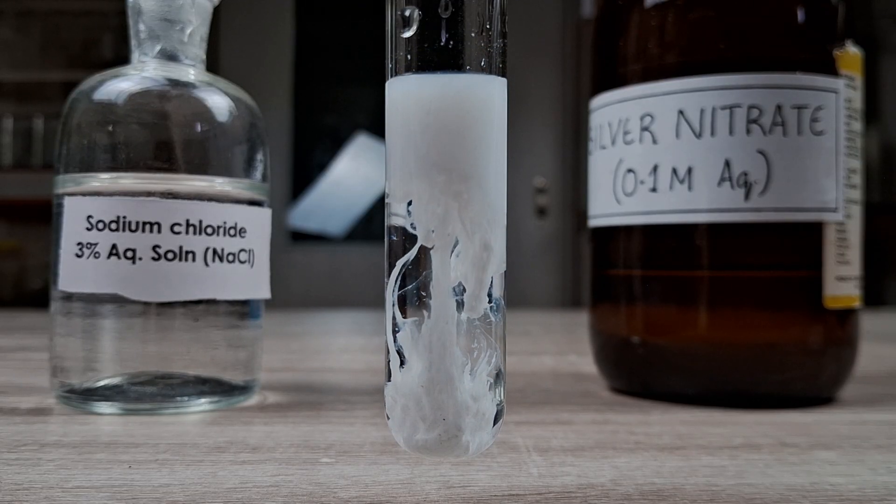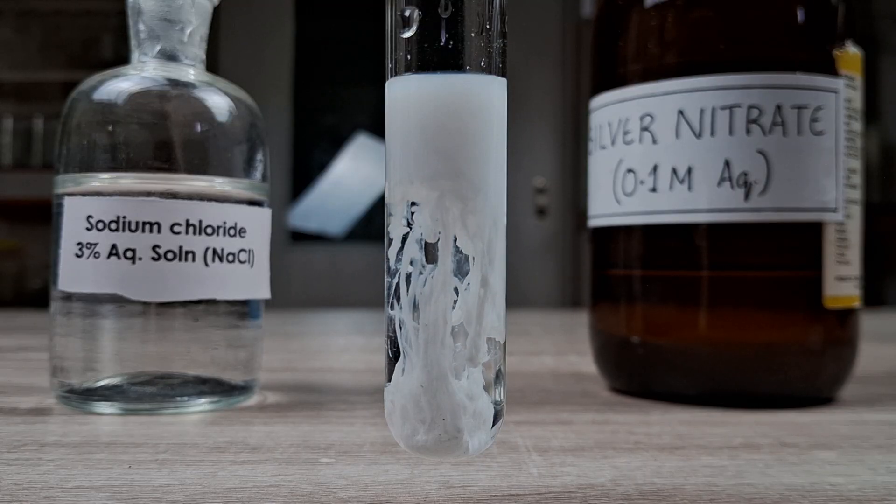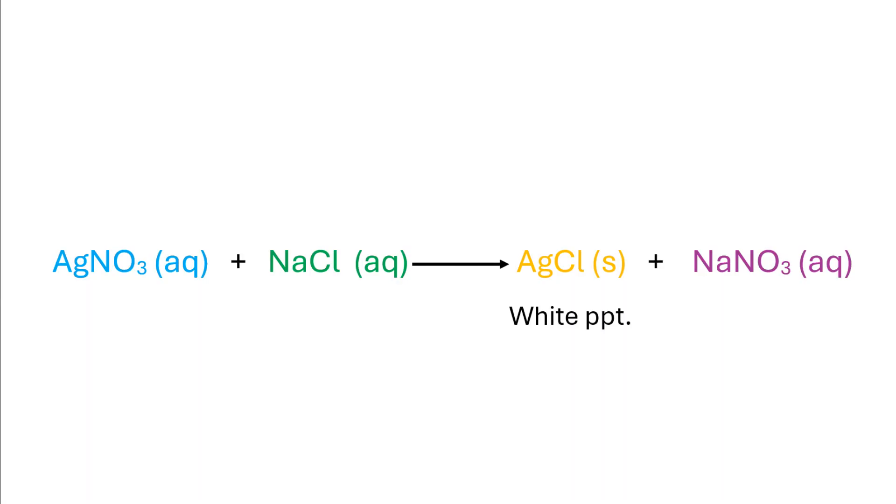The double displacement reaction of sodium chloride and silver nitrate can be summarized in the chemical equation shown here.